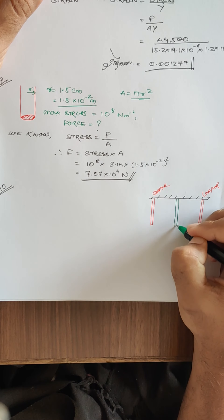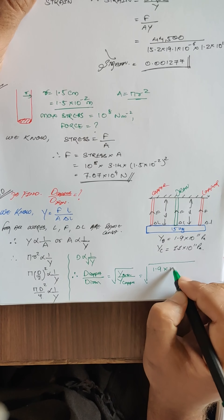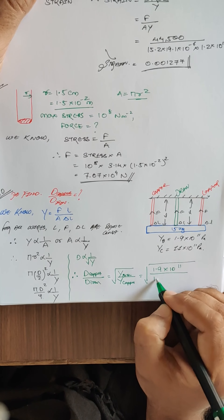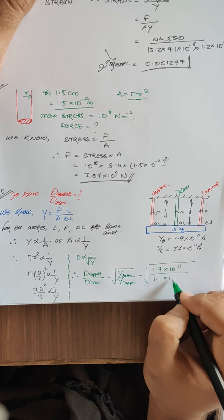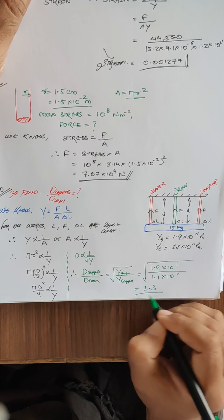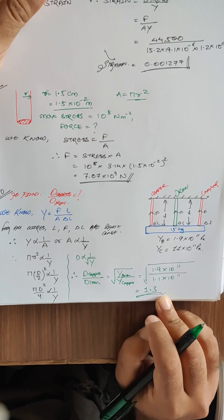Therefore, d_copper / d_iron = √(Y_iron / Y_copper) = √(1.9 × 10¹¹ / 1.1 × 10¹¹) = √(1.9/1.1) ≈ 1.31. So the ratio of the diameter of copper to the diameter of iron is approximately 1.3.